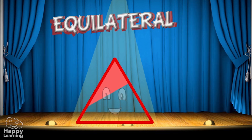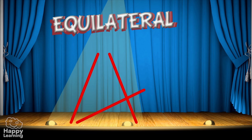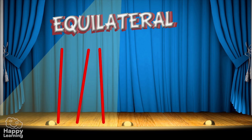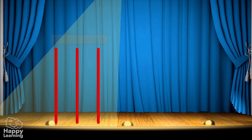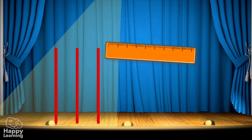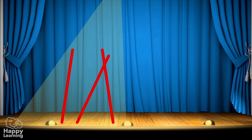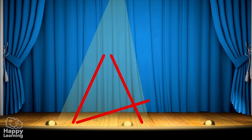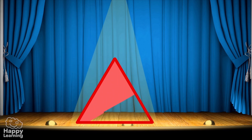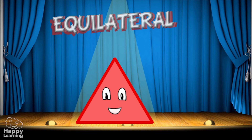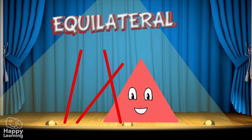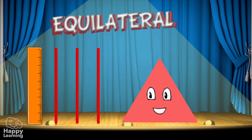In equilateral triangles all the sides are the same length. Can you see how it's formed? Good! So this triangle is equilateral because its three sides are exactly the same.